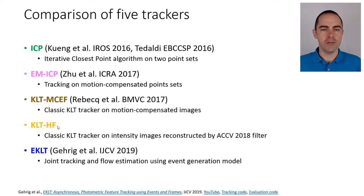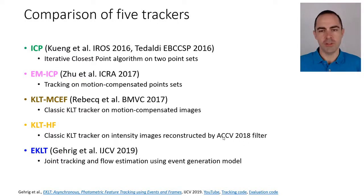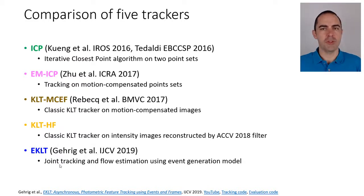KLT HF is the classical KLT tracker running on reconstructed grayscale images obtained from the high-pass filter proposed in the 2018 ACCV paper. We have seen this high-pass filter as well in the video on image reconstruction.